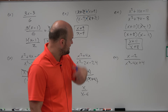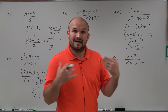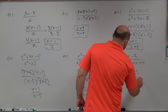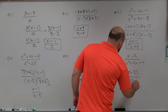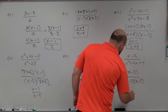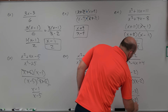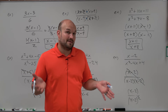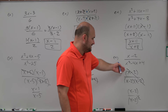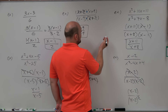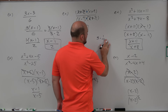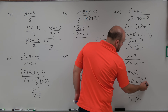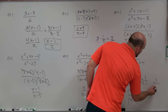In the last example, I have x minus 2 divided by x squared minus 4x plus 4. I can't factor the numerator, but the denominator is a perfect square binomial, which rewrites as x minus 2 times x minus 2. So I have x minus 2 over x minus 2 squared. Since x minus 2 over x minus 2 equals 1, I'm left with 1 over x minus 2 as my final answer.